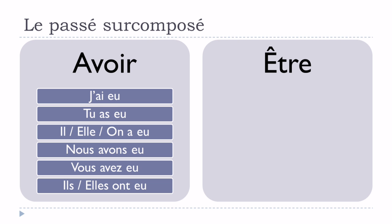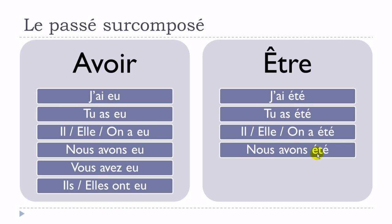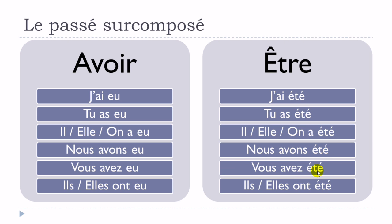For the exceptions using être, être at the passé composé goes like this: j'ai été, tu as été, il/elle/on a été, nous avons été, vous avez été, ils/elles ont été. This will be the first part for the être-exception verbs in the passé surcomposé.